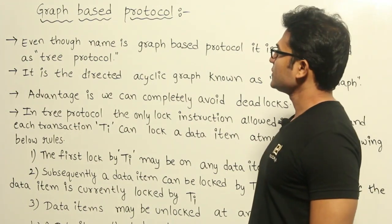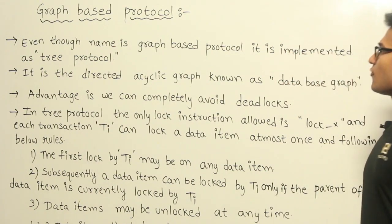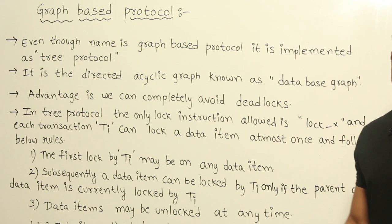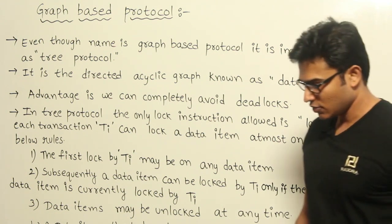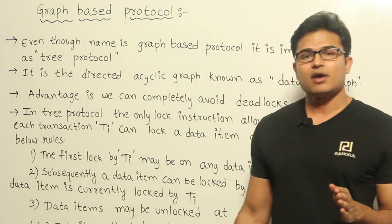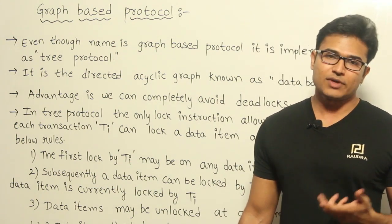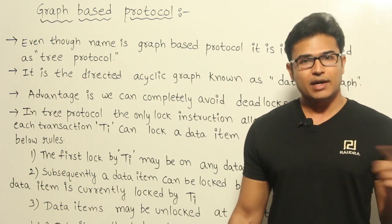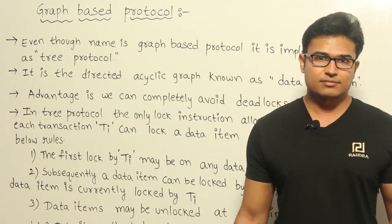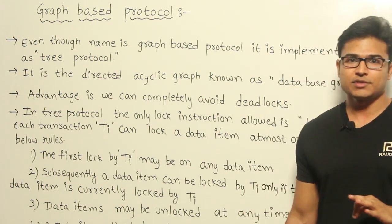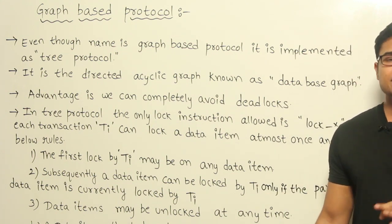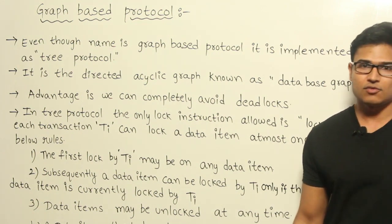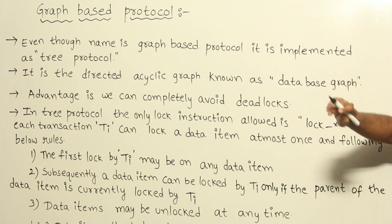Now let's look at graph-based protocols. There are two reasons why we use them. First, whenever we use locking, the problem is deadlock, and we have to avoid it. One way is to break the condition of hold-and-wait. The second way is to provide some ordering between resources and enforce transactions to request data items in that order.